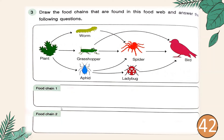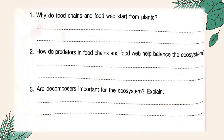For the first part, draw two food chains. For example: the plant is eaten by the worm, the worm is eaten by the spider, and the spider is eaten by the bird. Draw it and then think of one more food chain. After that, answer the following questions. Question one: why do food chains and food webs start from plants? Because plants can make their own blank — you complete that answer.